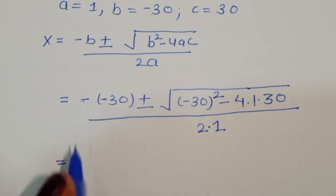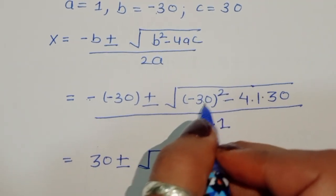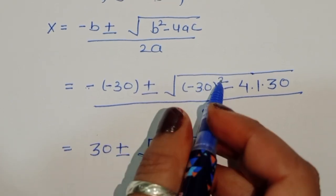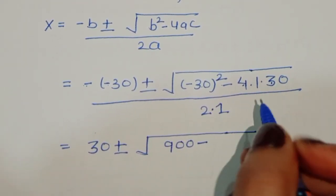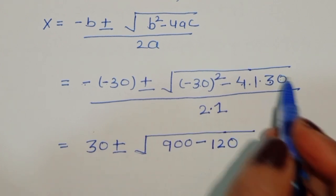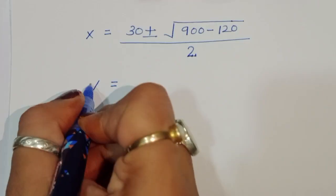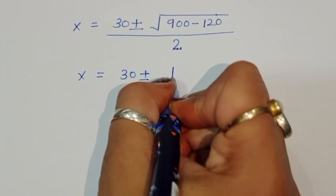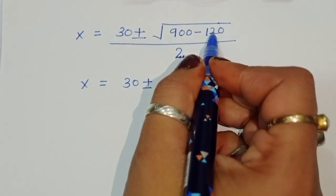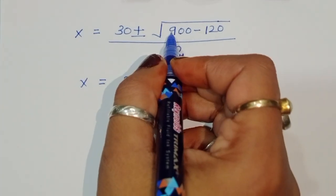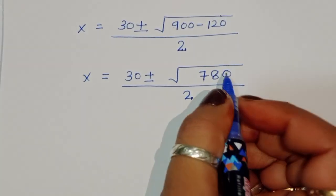Simplifying: 30 squared is 900, and 4 times 1 times 30 is 120. So we get 30 plus or minus the square root of 900 minus 120, divided by 2. That gives 780 under the square root, divided by 2.